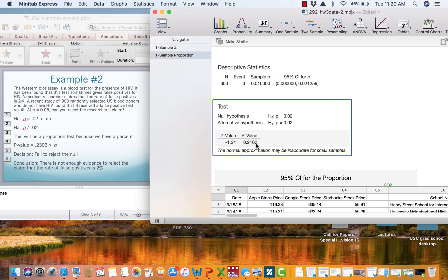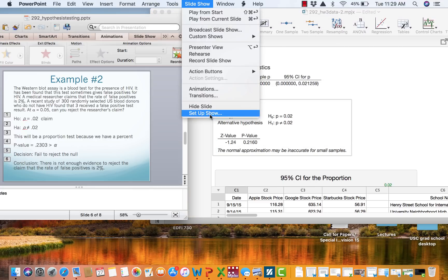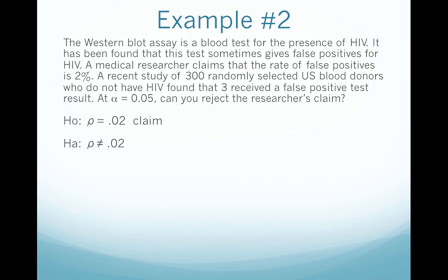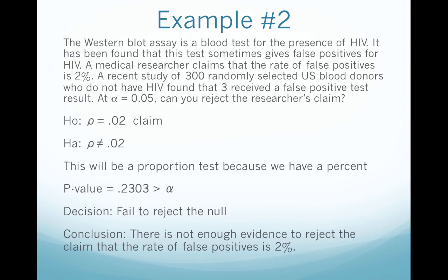We take that back over to PowerPoint to compare to alpha. The p-value of .2303 is clearly bigger than alpha of 5%, so when the p-value is bigger than alpha we fail to reject the null. The null is the claim and we fail to reject it, so we're not rejecting the claim. There is not enough evidence to reject the claim that the rate of false positives is 2%.